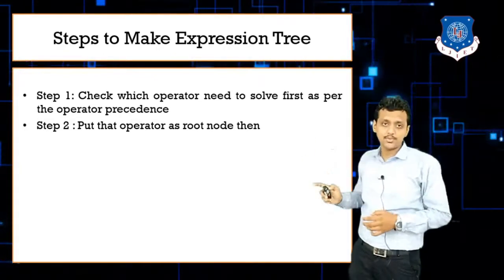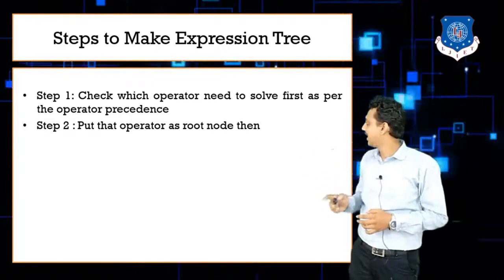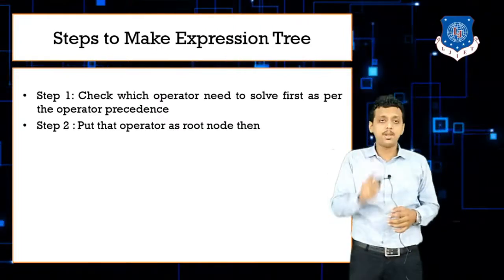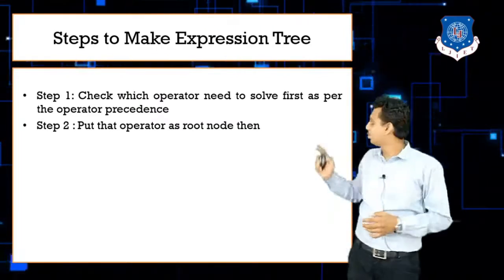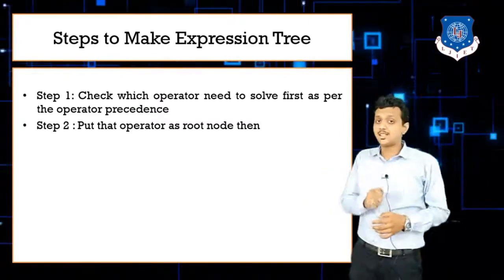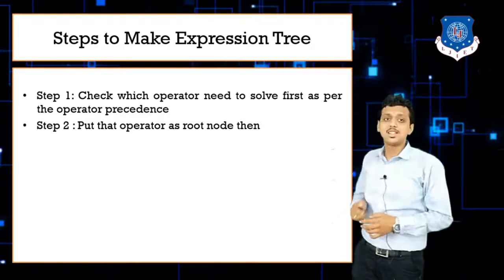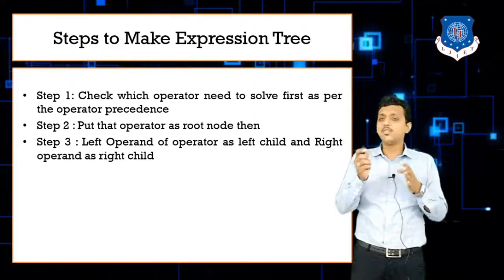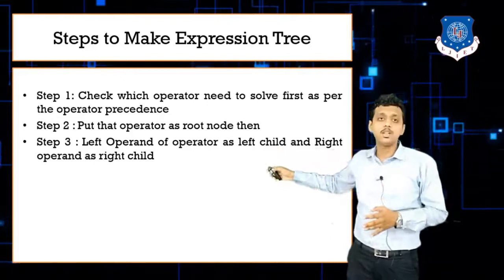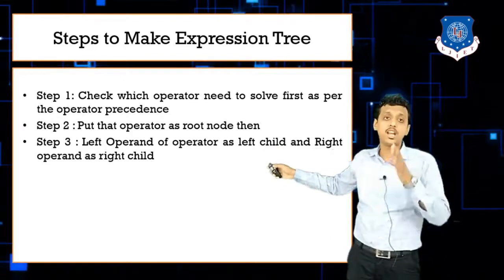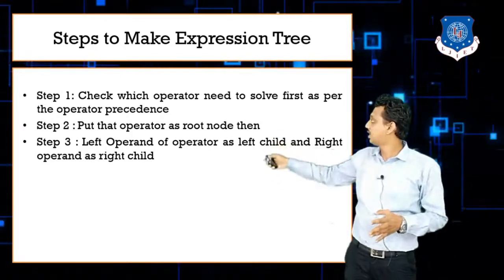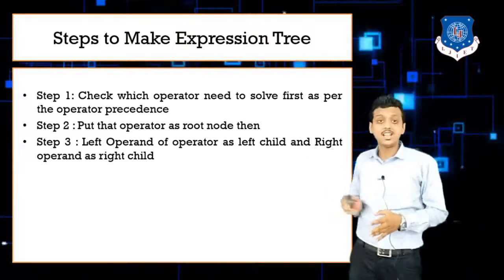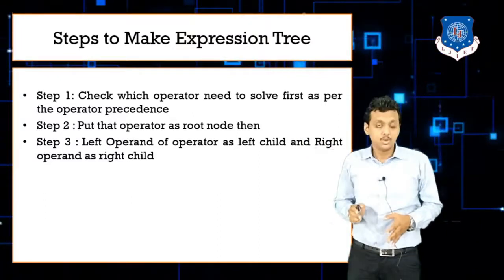Step two: make that chosen operator your root node. Step three: the operands on the left side of the operator become the left child, and the operands on the right side of the operator become the right child.